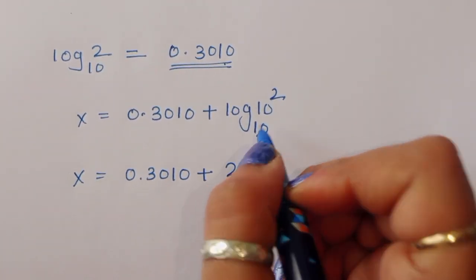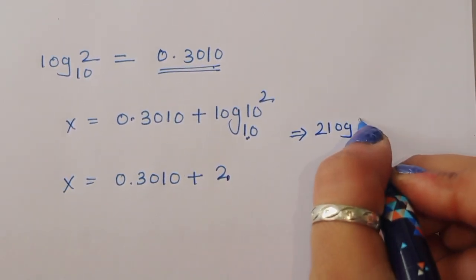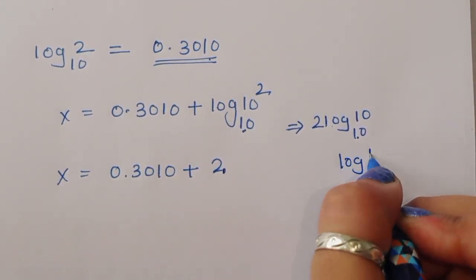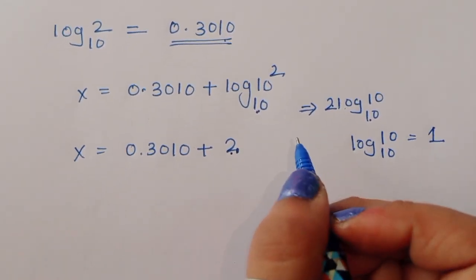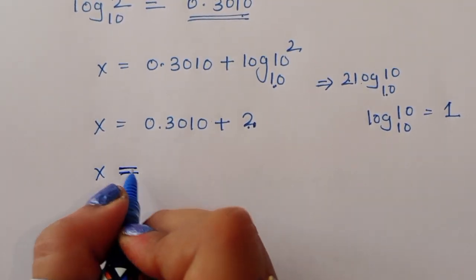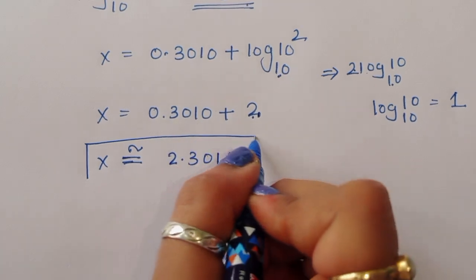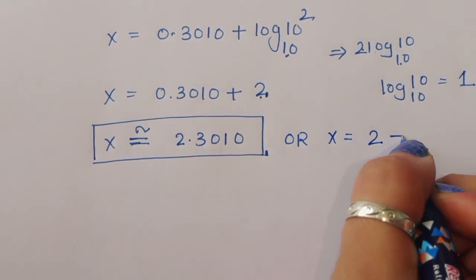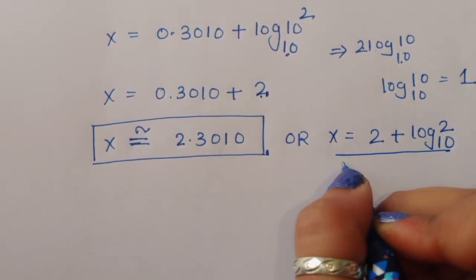Now log(10²) to the base 10 equals 2·log(10) to the base 10, and since log₁₀(10) = 1, that gives 2. So x = 0.3010 + 2 = approximately 2.3010. We can also write x = 2 + log₁₀(2).